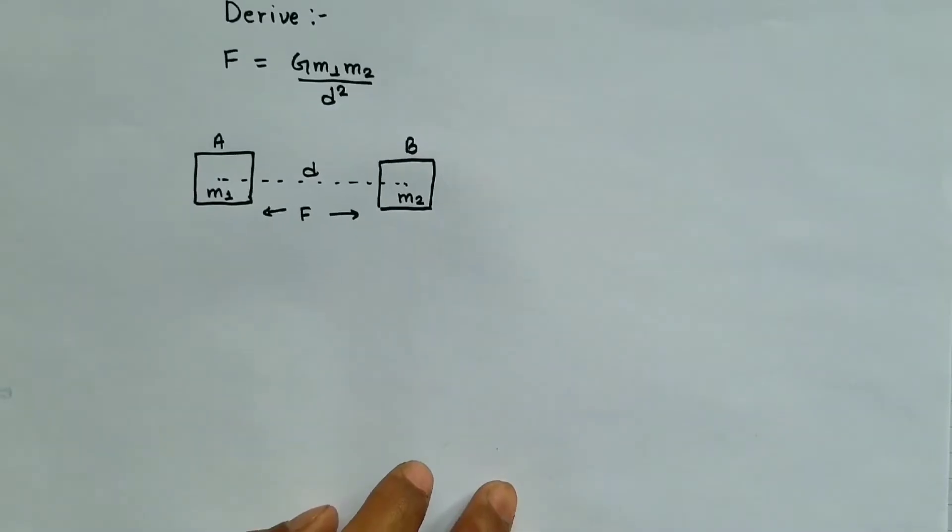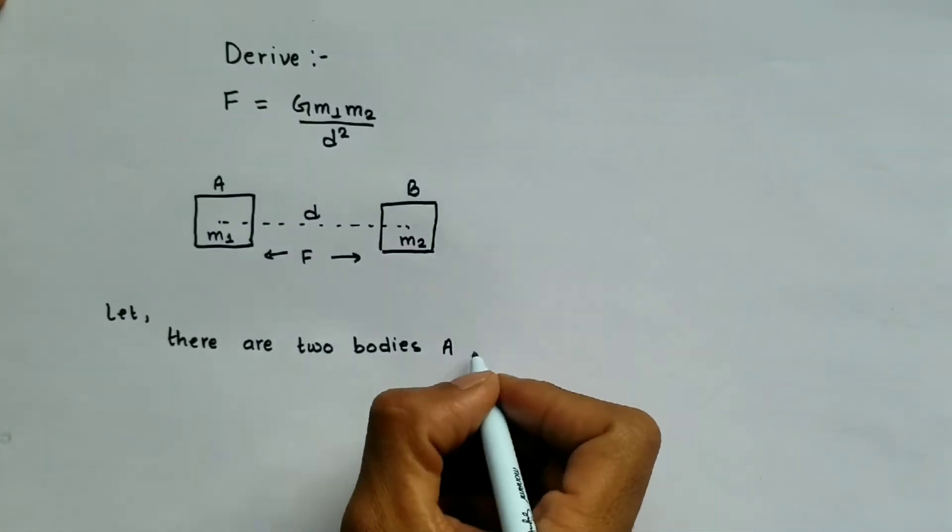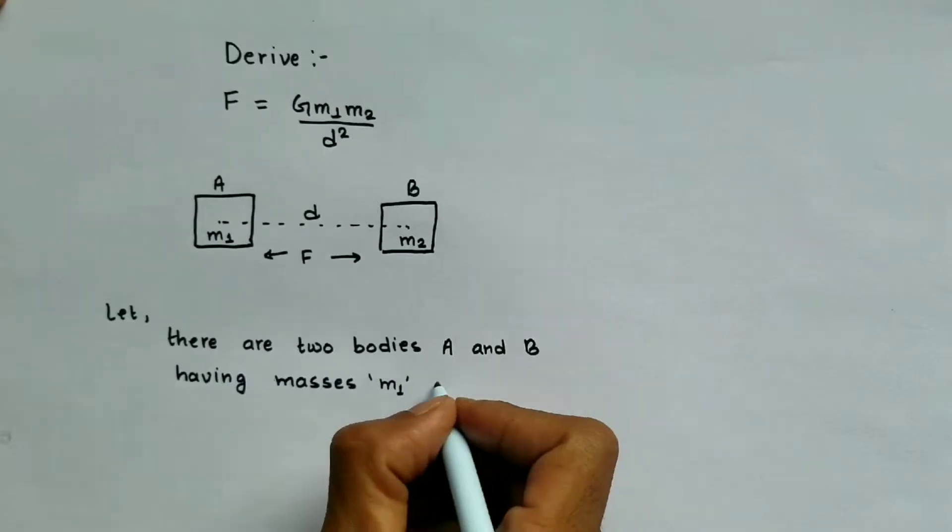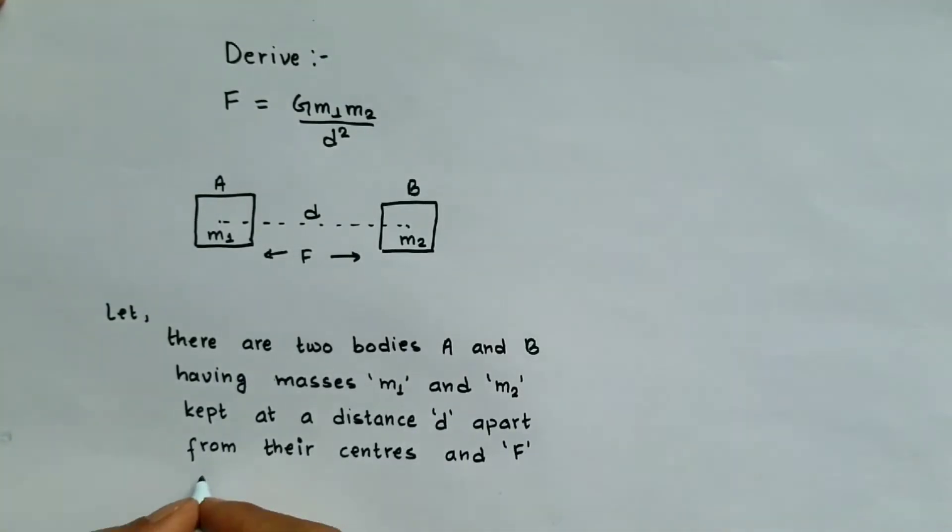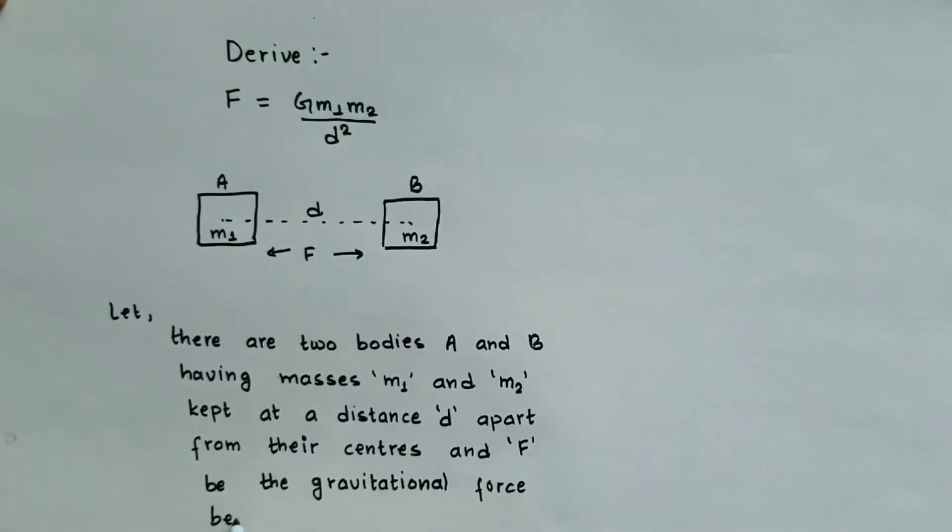Now we just need to write the same thing in plain English. Let there be two bodies A and B having masses m1 and m2 kept at distance d from their centers, and gravitational force be F.